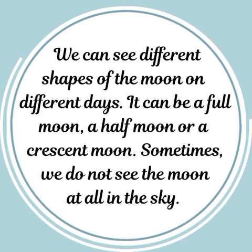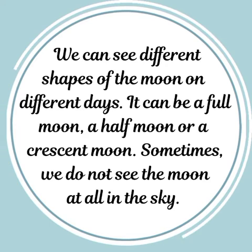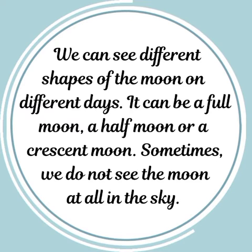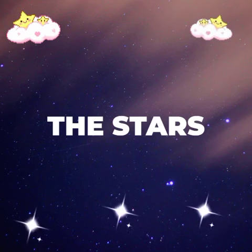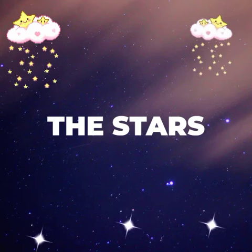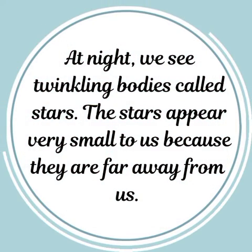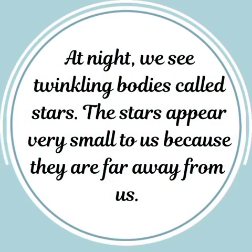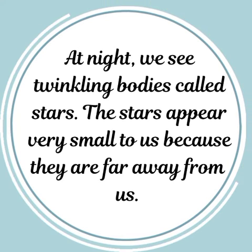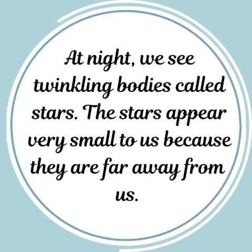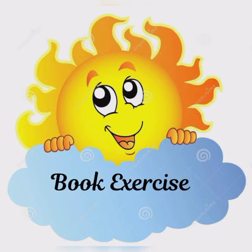We can see different shapes of the moon on different days. It can be a full moon, a half moon, or a crescent moon. Sometimes we do not see the moon at all in the sky. At night we also see twinkling bodies called stars. The stars appear very small to us because they are far away from us.